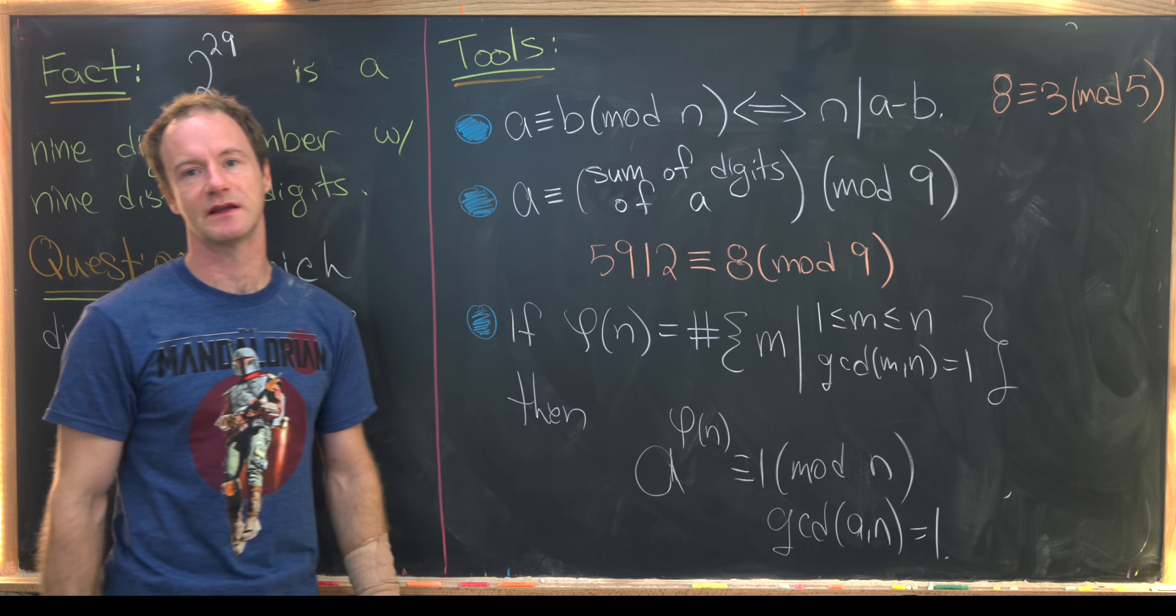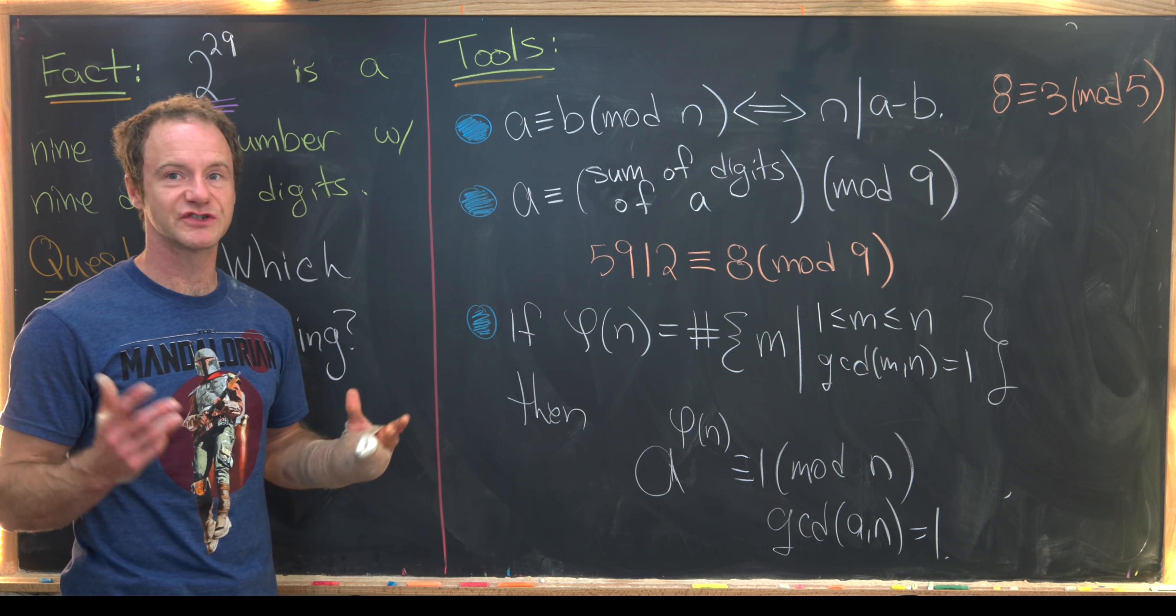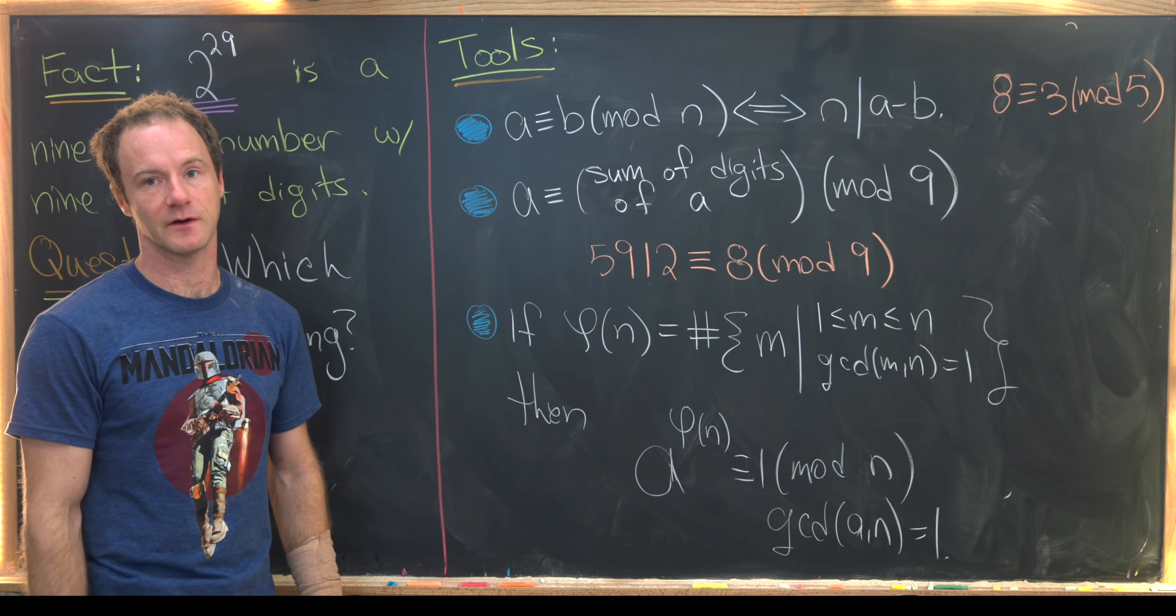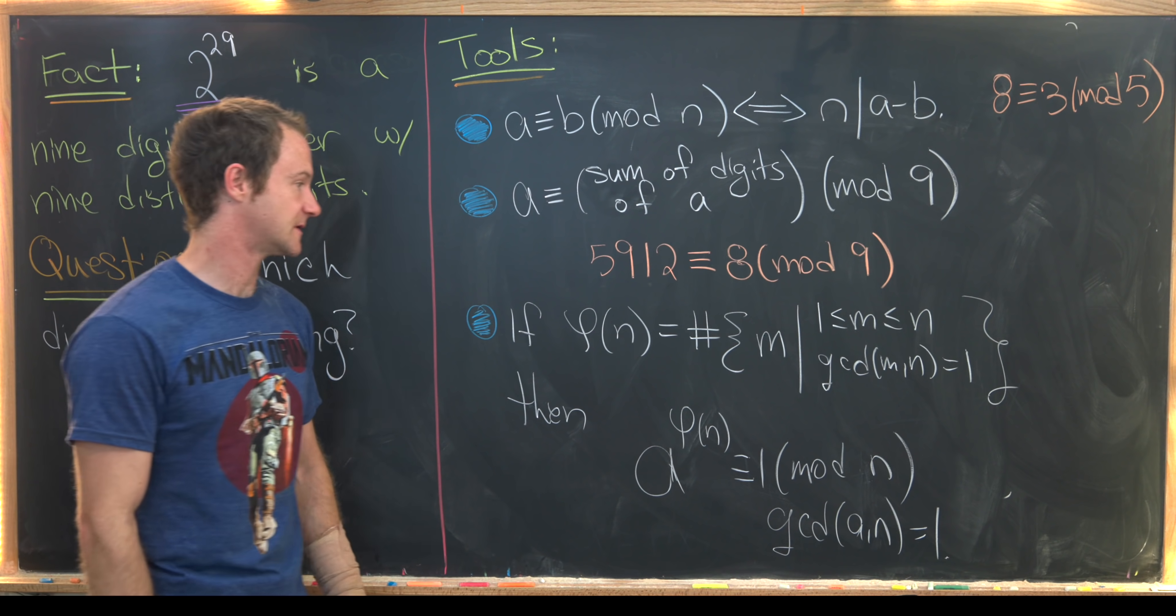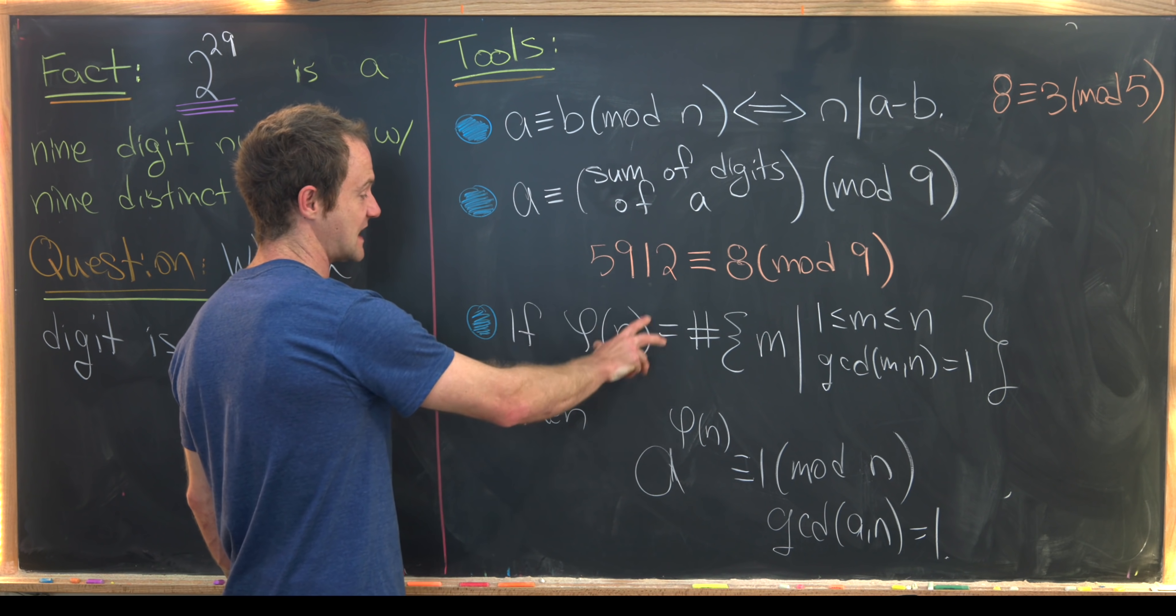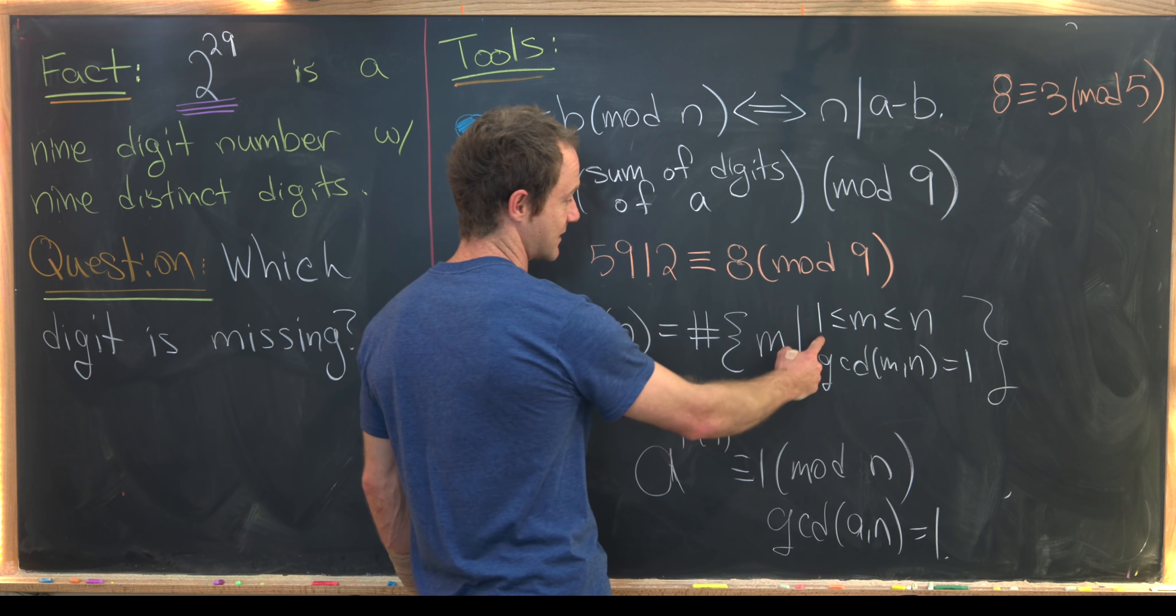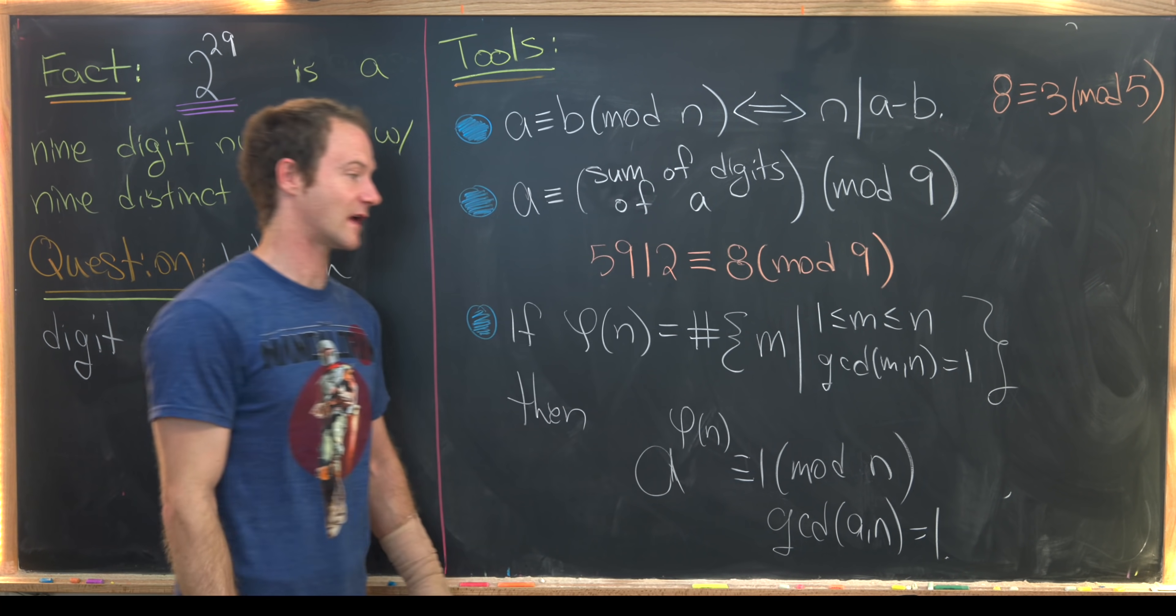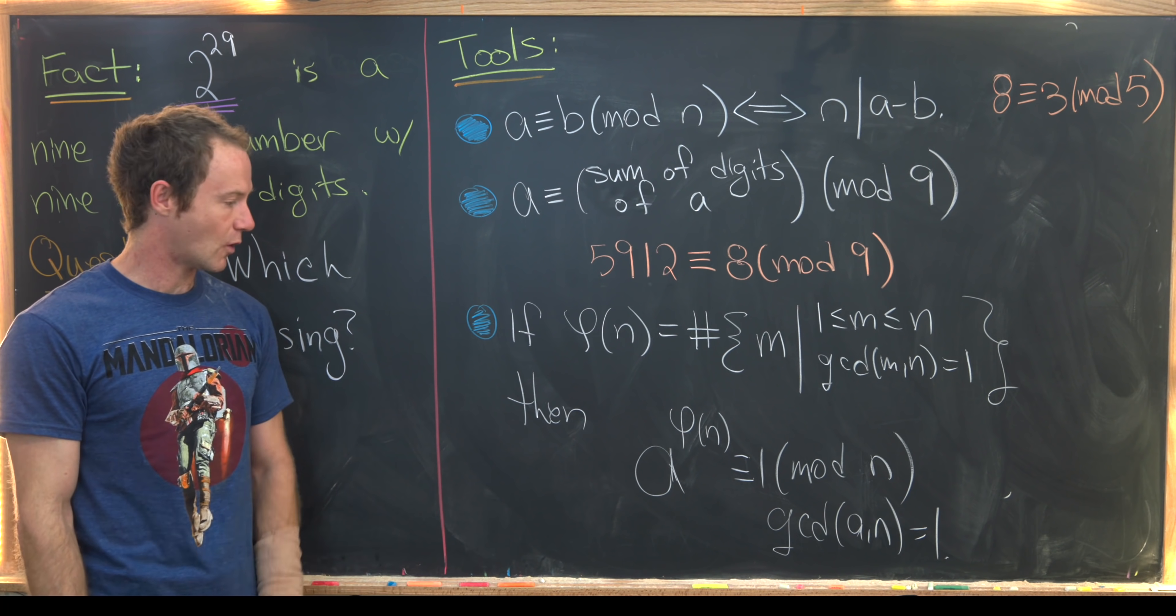Okay, then finally we're going to look at Euler's generalization of Fermat's theorem, and that involves something called Euler's totient function. So let's recall that given a natural number n, phi evaluated at n is the number of natural numbers between one and n that are relatively prime to n.